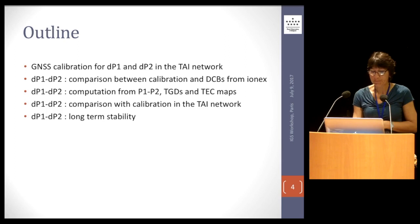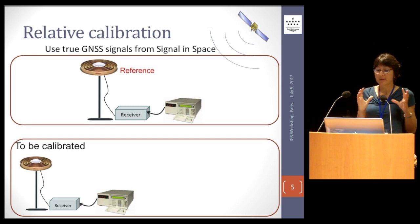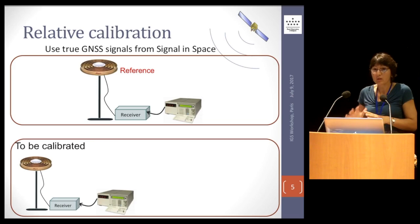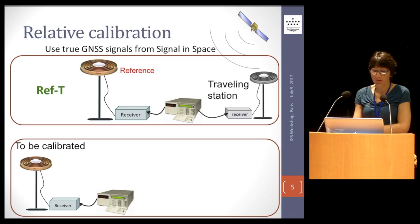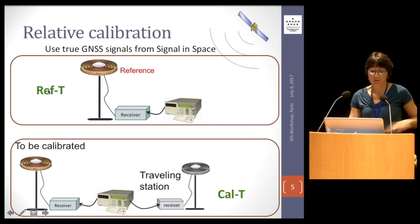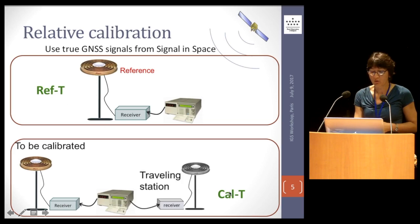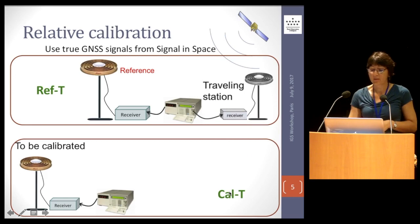In the TAI community, we have one reference which has in fact been calibrated absolutely using a simulator, but about ten years ago. We maintain this reference in several locations. From a reference, we use a traveling station that we compare first to the reference, so we have the difference between the hardware delay of the traveling station with respect to the reference. Then we move the traveling station to the different stations to be calibrated, where we have the difference of hardware delay between the traveling and the station to be calibrated. Then to make a closure, we go back to the reference to verify stability in the traveling equipment.